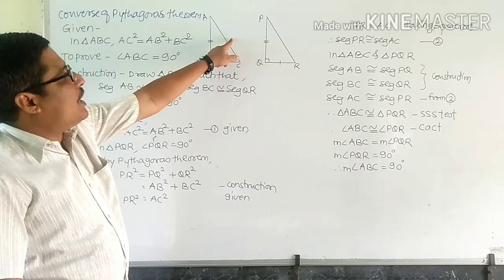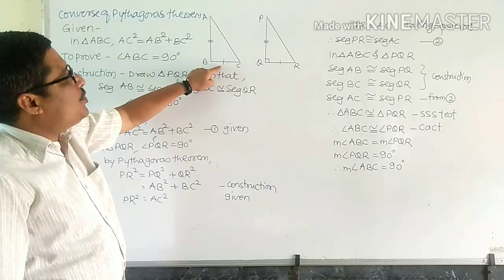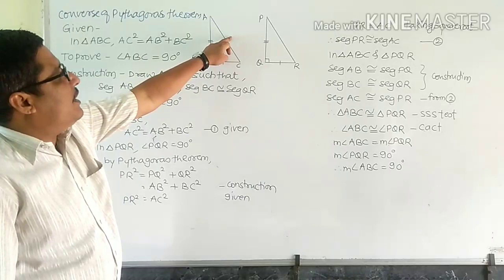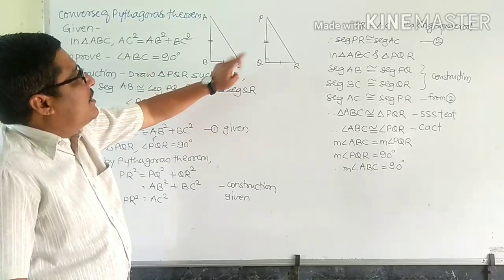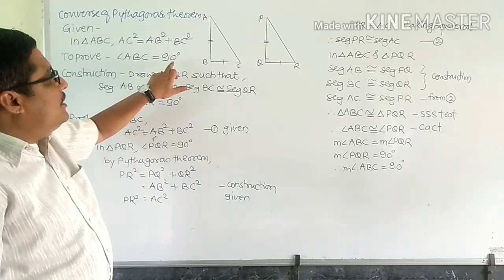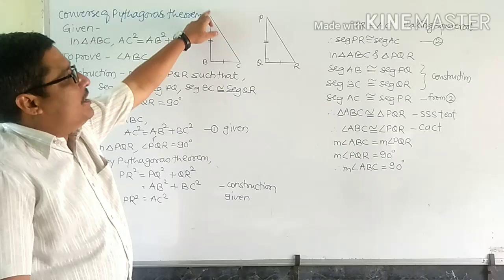Here, triangle ABC is given, in which the square of one side is equal to the sum of squares of the remaining two sides. That means, in triangle ABC, AC² is equal to AB² + BC² is given. We have to prove that this triangle is a right angle triangle, meaning we have to prove that angle ABC is 90 degrees.